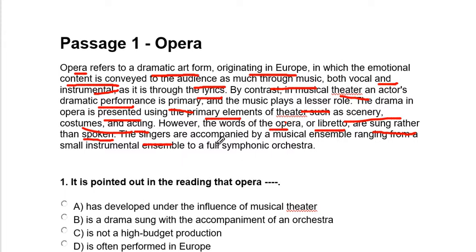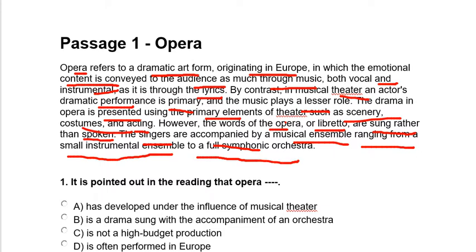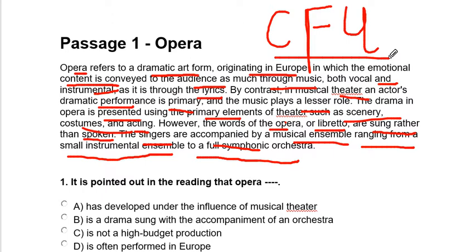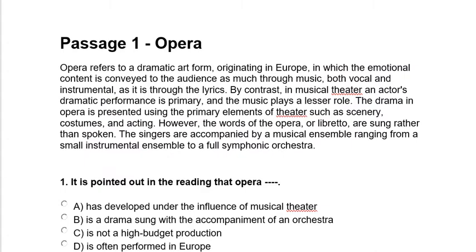The drama in opera is presented using the primary elements of theater such as scenery, costumes, and acting. However, the words of the opera, or libretto, are sung rather than spoken. These singers are accompanied by a musical ensemble ranging from a small instrumental ensemble to a full symphonic orchestra. These are the key terms I have marked while reading. This is how you mark key points, and then form CFU — Check For Understanding — questions.